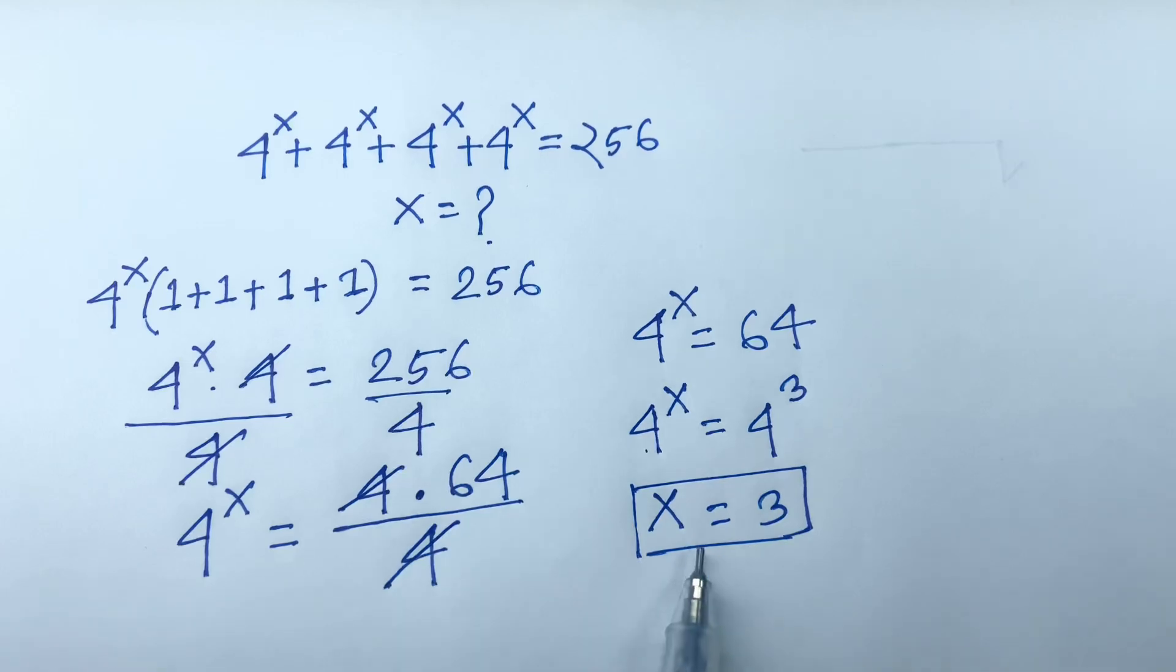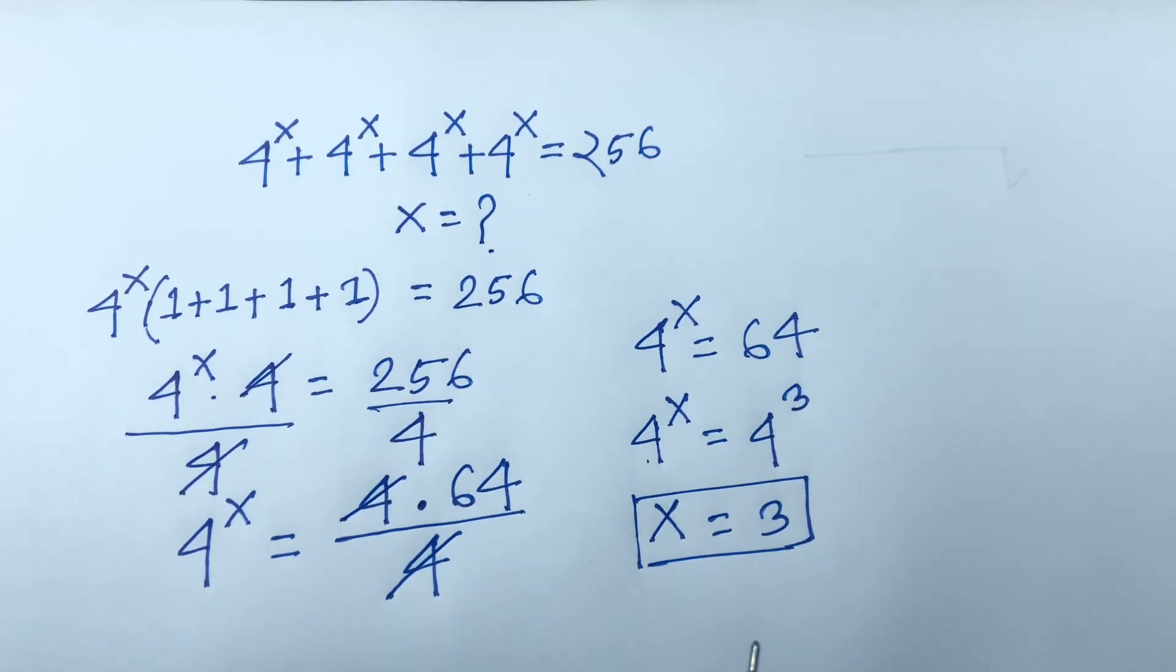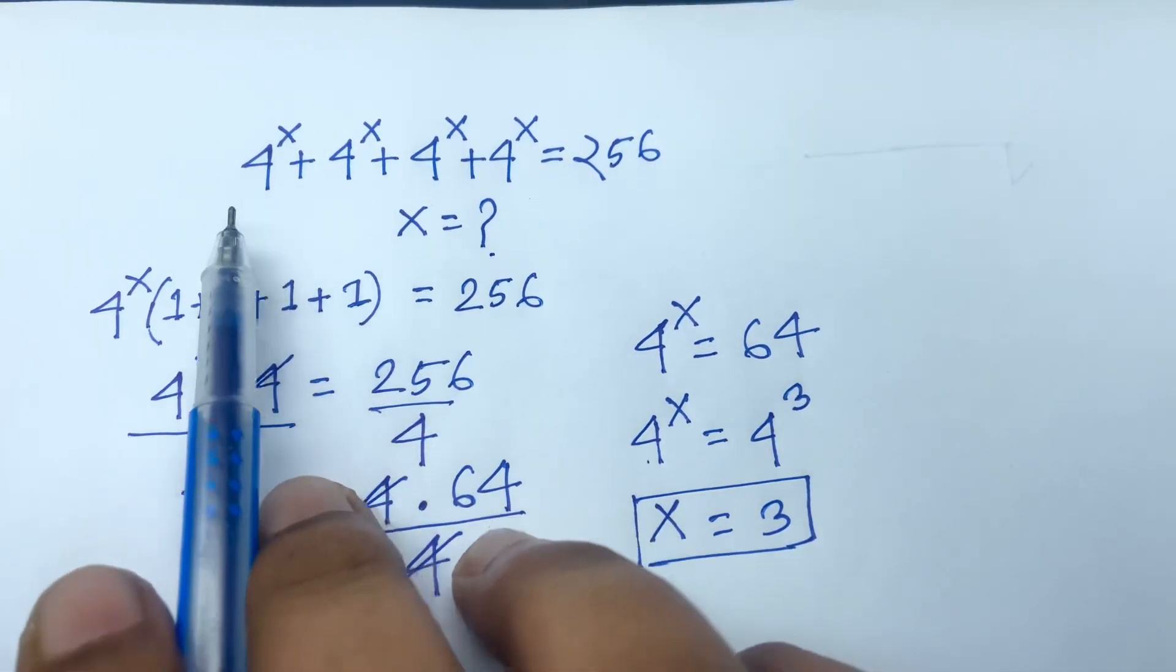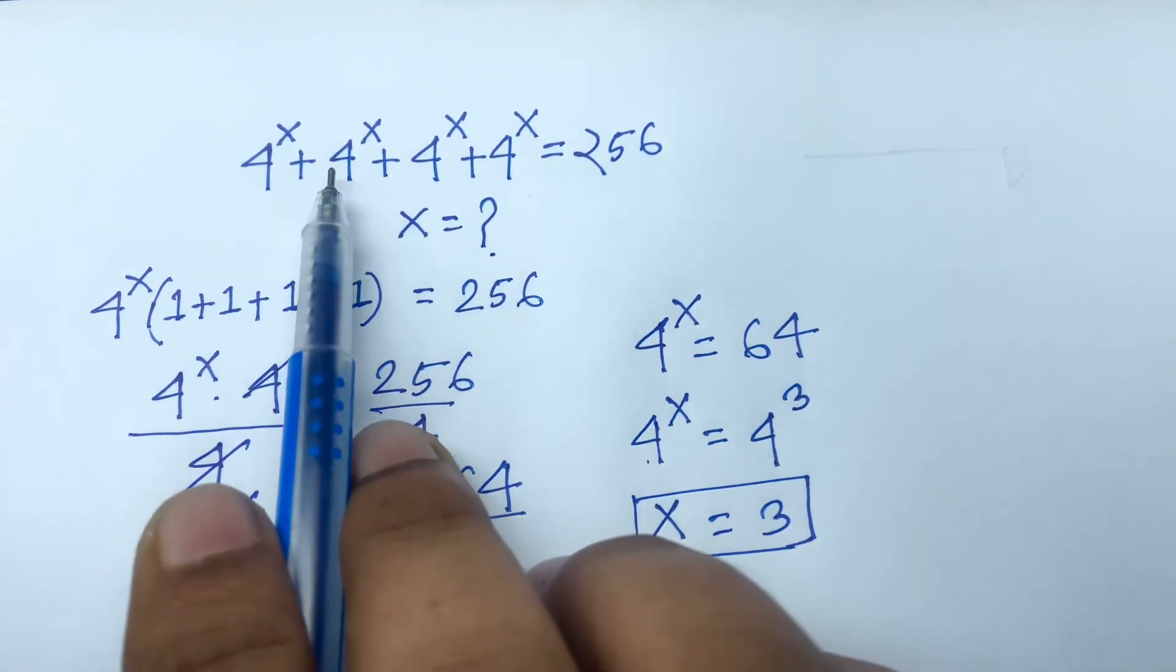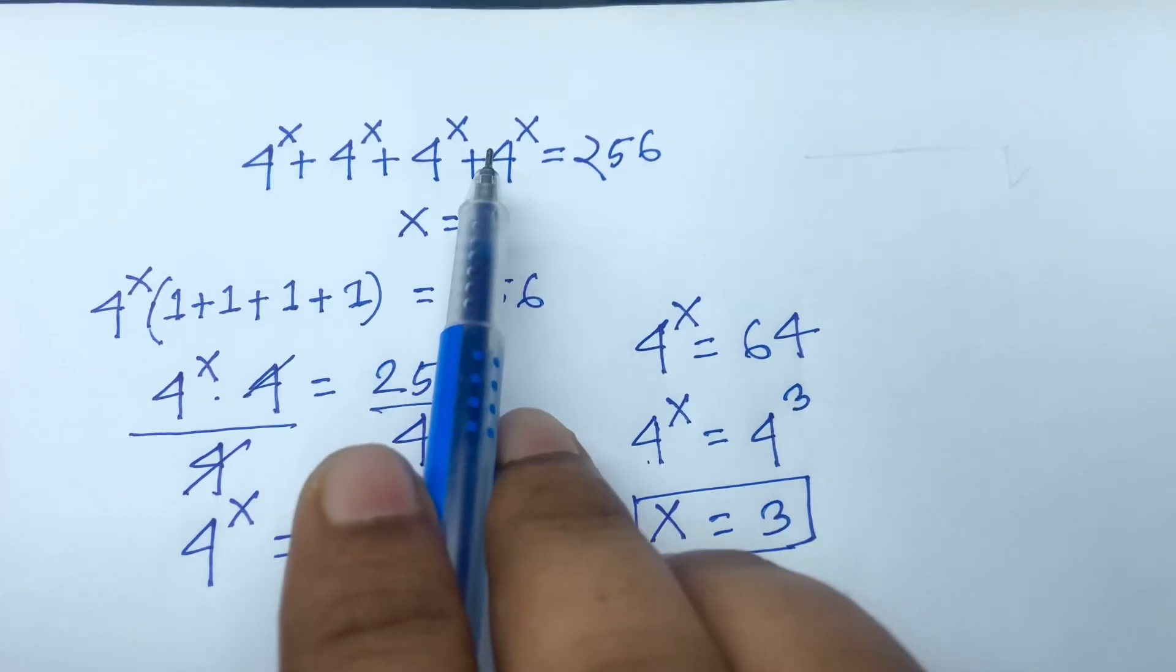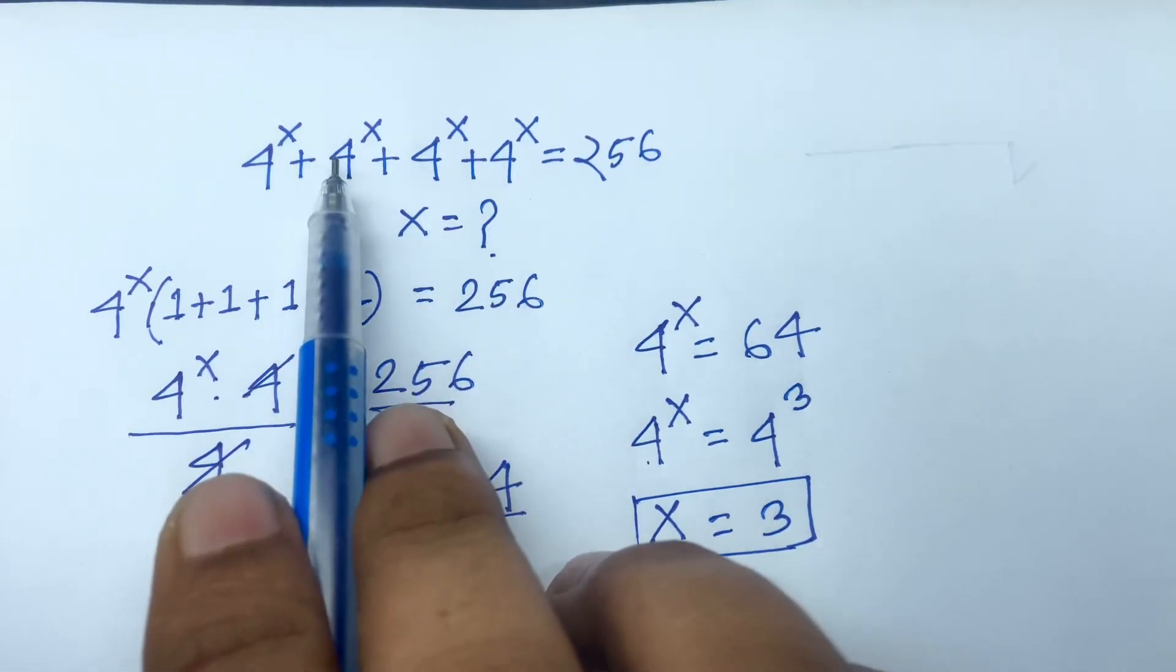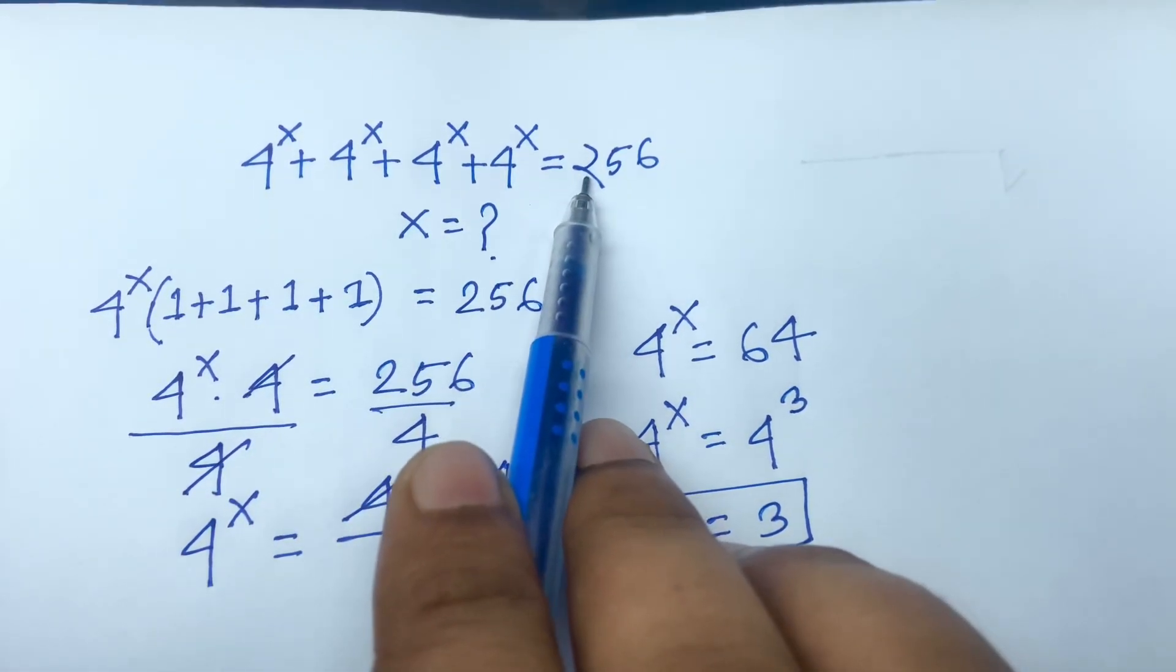Let's check our final answer, x equals 3. So 4 to the power 3 equals 64. We have four terms of 64, so 4 times 64 equals 256. This confirms our answer.